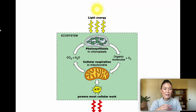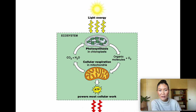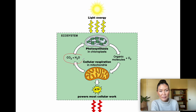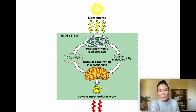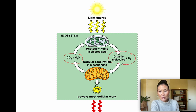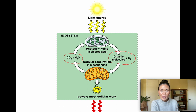In my previous video I was talking about cellular respiration. Most of cellular respiration happens in the mitochondria, where cells are making ATP. One of the products of cellular respiration, as you can see in this diagram, is carbon dioxide and water. These products of cellular respiration are the reactants or inputs of photosynthesis. Photosynthesis is a process by which plants or autotrophs will capture solar energy in the chloroplast and produce organic molecules like sugar, as well as oxygen gas.